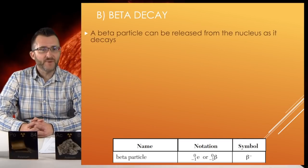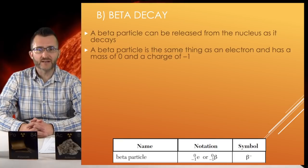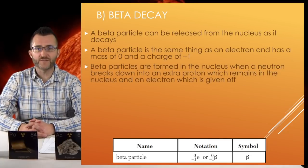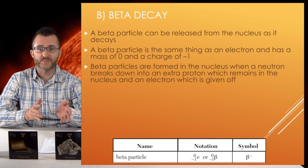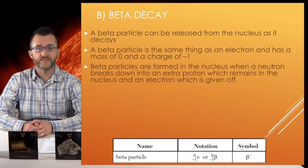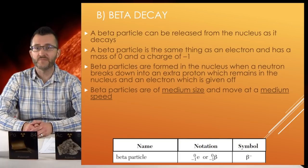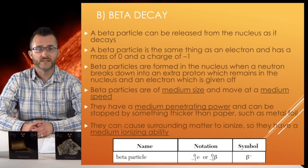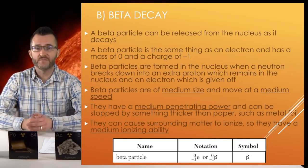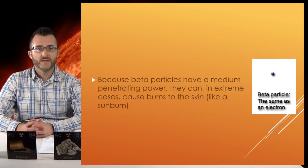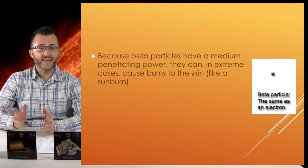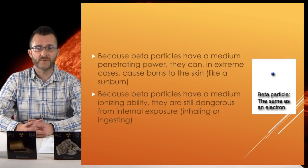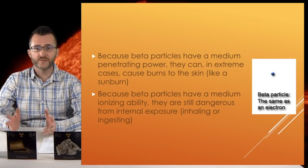Beta decay. A beta particle can be released from the nucleus as it decays. A beta particle is the same thing as an electron and has a mass of 0 and a charge of -1. Beta particles are formed in the nucleus when a neutron breaks down into an extra proton, which remains in the nucleus, and an electron, which is given off. Beta particles are of medium size and move at a medium speed. They have a medium penetrating power and can be stopped by something thicker than paper, such as metal foil. They can cause surrounding matter to ionize, so they have a medium ionizing ability. Because beta particles have a medium penetrating power, they can in extreme cases cause burns to the skin, like a sunburn. They are still dangerous from internal exposure through inhaling or ingesting.